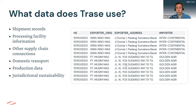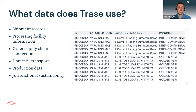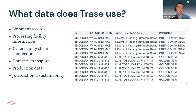In terms of specific data we use: shipment records — customs declarations and bills of lading — are the starting point. We combine that with information on processing facilities, including ownership, specific locations, and capacities. We also use other supply chain connections, such as tax information, and for our beef supply chains, if we know a particular shipment is halal, we can often connect that to specific halal slaughterhouses. We also use domestic transport data to understand how commodities moved around in the producer country prior to export, production data, and measures of jurisdictional sustainability — meaning measures and indicators of environmental impacts in producing regions, such as deforestation exposure.